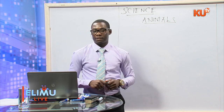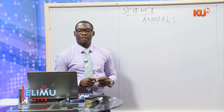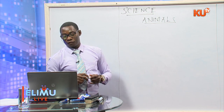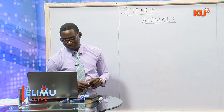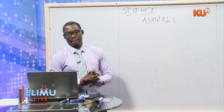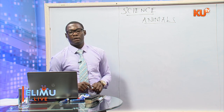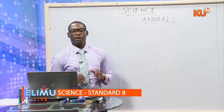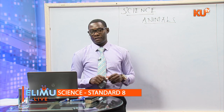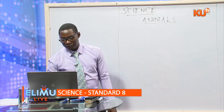Animals can protect themselves by stinging, by running away, by flying off, or by hiding in shells. You should note the difference: flying is a way through which animals move from one place to another, while flying off is a way through which animals protect themselves. Get the difference between the two.